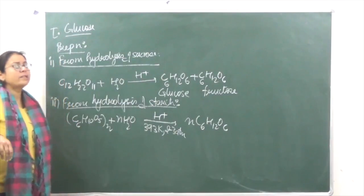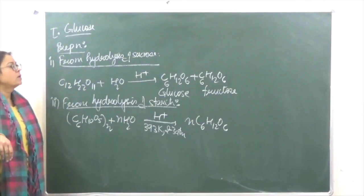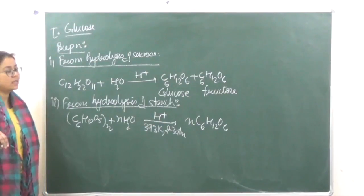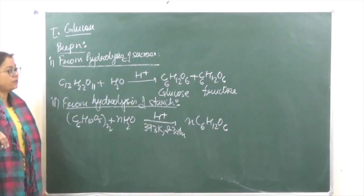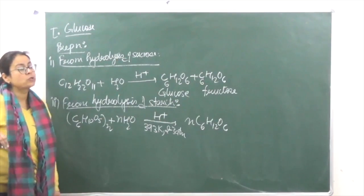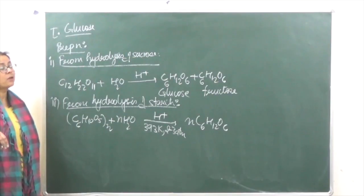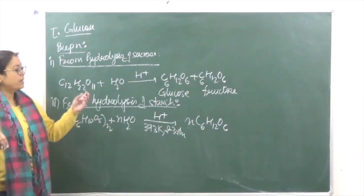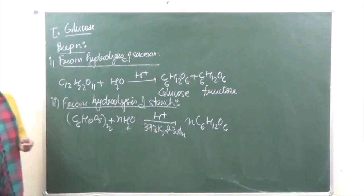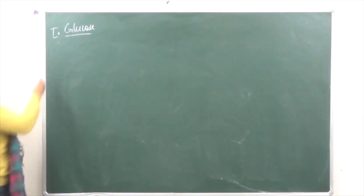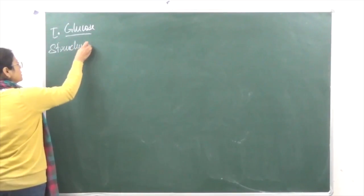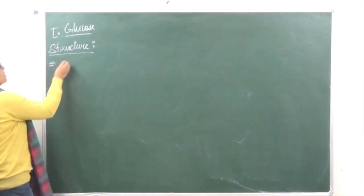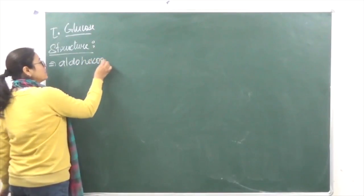When we go on to the structure of glucose, a lot of experimentation and reactions were carried out. First, it was necessary to find out the functional groups present. It was seen that glucose gave all the reactions of aldehydes. So the functional group present is an aldehyde group. When we talk of the structure of glucose, glucose is an aldohexose — it has an aldehyde group and is also known as dextrose.